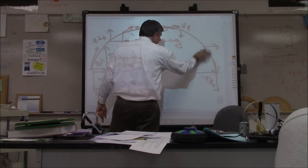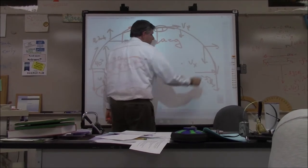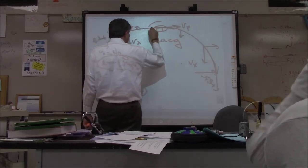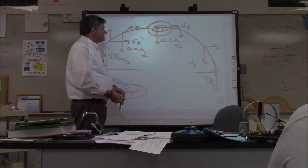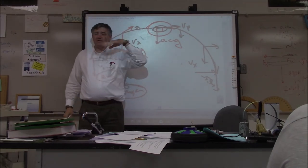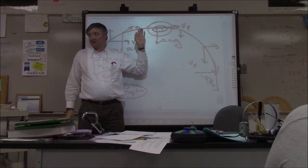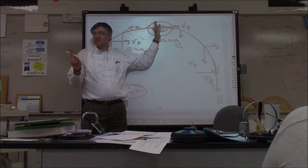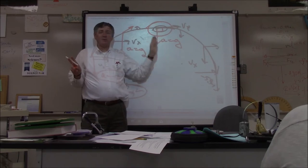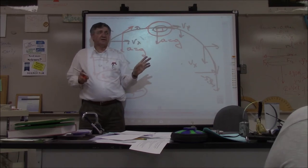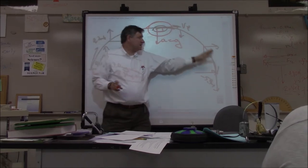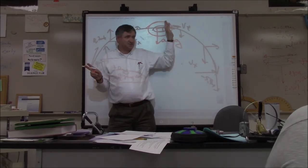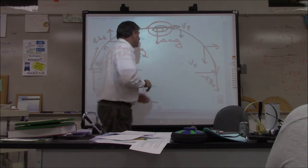As it starts back down, Vy gets bigger in the negative direction. Once it reaches its maximum height, you can view the rest of it as a lemming problem — because once it starts to fall, initial vertical velocity is zero. It becomes a lemming problem: starting at zero, then falling. That's it.